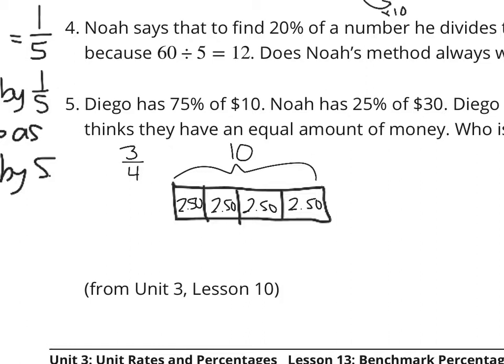75% is 3 out of those four. So, I could take $2.50 and multiply by 3, or $2.50 plus $2.50 plus $2.50, which is $7.50. So, Diego has $7.50.